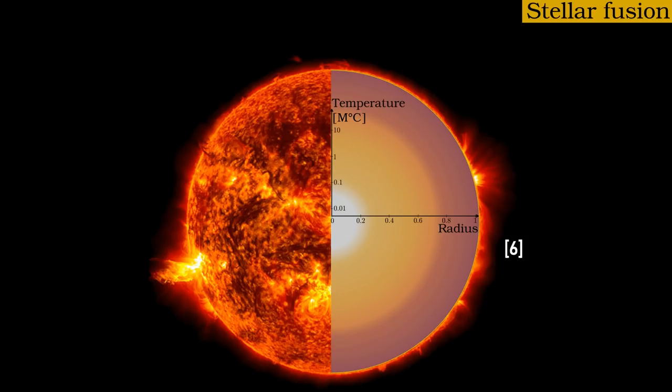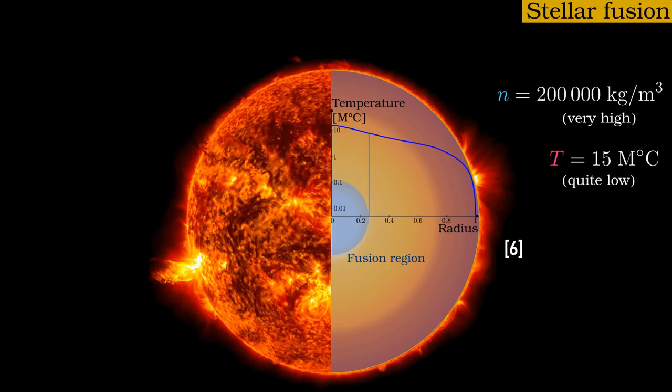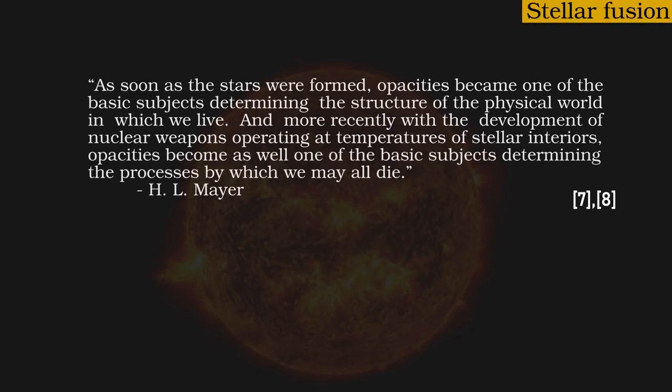Stars like the sun are massive enough to keep plasma confined under gravity, even though the temperature and pressure are high enough for fusion, at least in the center. It is not only the gravitational force, but the matter itself which is important for the quality of confinement of a star. If a strong gravitational well were somehow synthesized and used to confine plasma in the lab, as some science fiction fans have suggested, it would rapidly cool down through bremsstrahlung losses. The large volume of plasma in a star traps radiation which would otherwise escape the plasma forever. The opacity, the measure of how opaque a substance is, determines the degree to which bremsstrahlung is trapped. A paper published early on in the history of fusion research was poetic in its description. As soon as the stars were formed, opacities became one of the basic subjects determining the structure of the physical world in which we live. And more recently, with the development of nuclear weapons operating at temperatures of stellar interiors, opacities become as well one of the basic subjects determining the process by which we may all die.